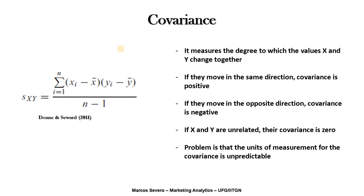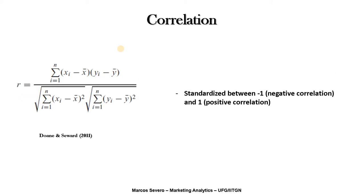For this reason we have correlation, which is a standardized measure — the same as covariance, but in the denominator I include the multiplication between the standard deviations of X and Y. This means that correlation is standardized between minus one, which is the strongest negative correlation between two variables, and plus one, which is the strongest positive correlation between two variables.